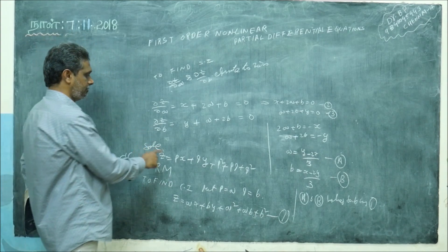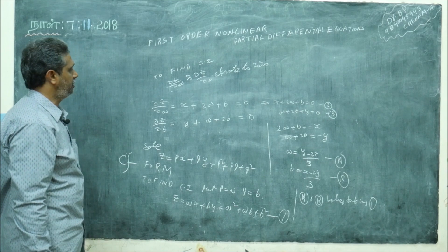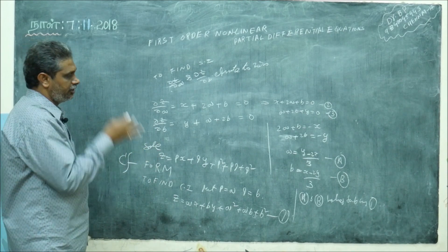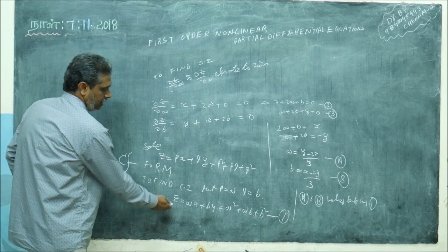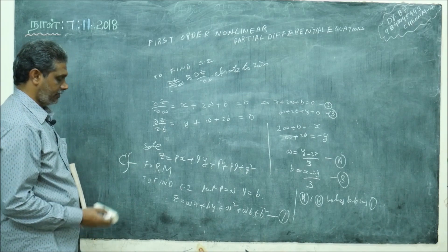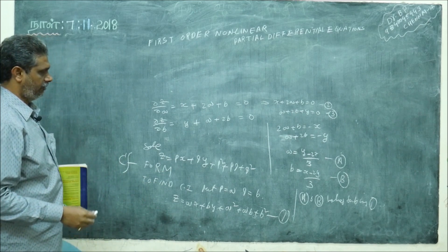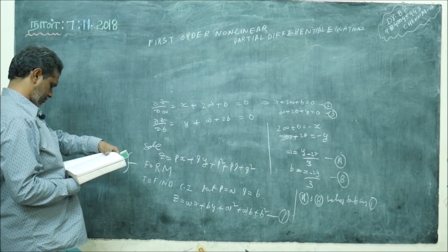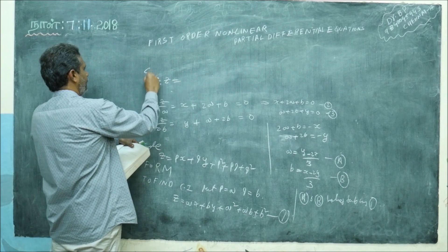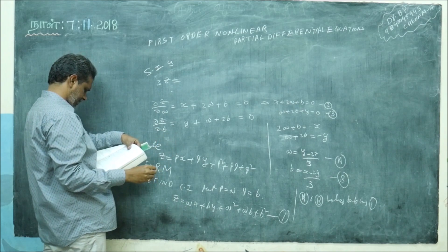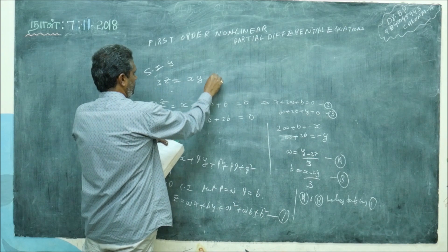Once you get the a and b values, substituting in equation 1, you will get the singular integral. So put p equal to a, q equal to b — you get the complete integral. To find singular integral, set ∂z/∂a and ∂z/∂b equal to 0, solve for a and b, come back and substitute into the complete integral. After substituting, the solution is: 3z is equal to xy minus x² .